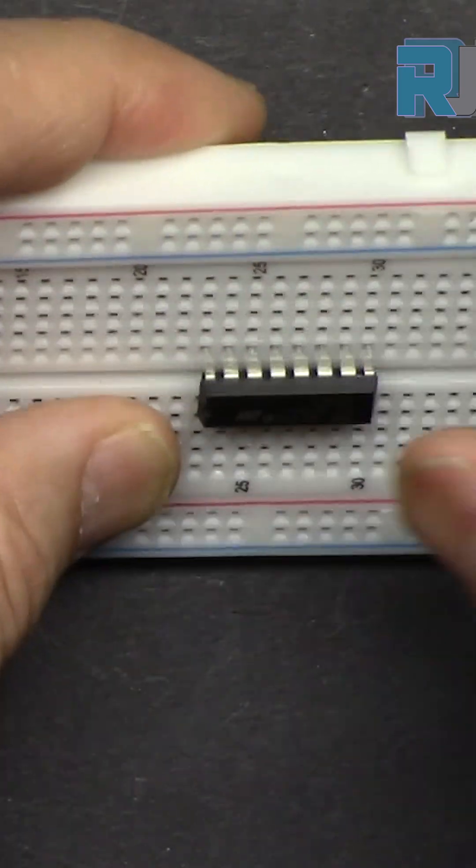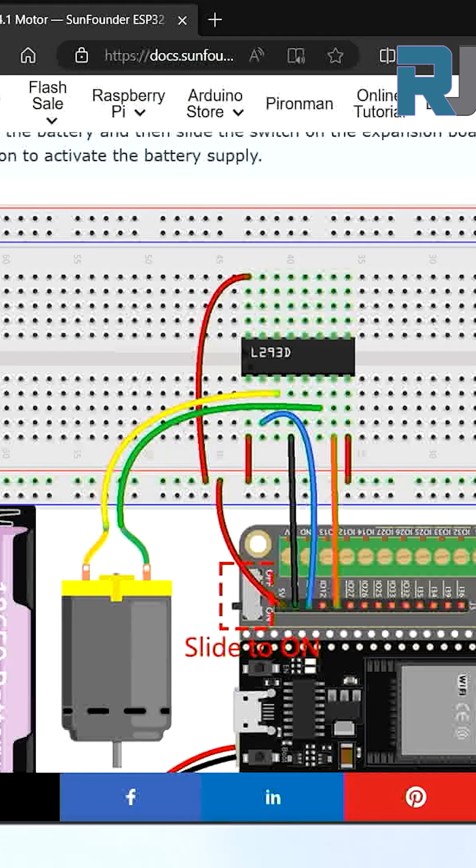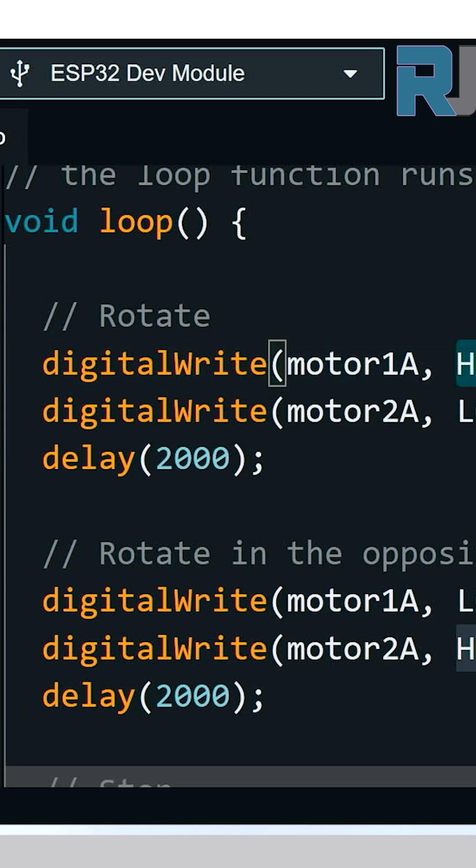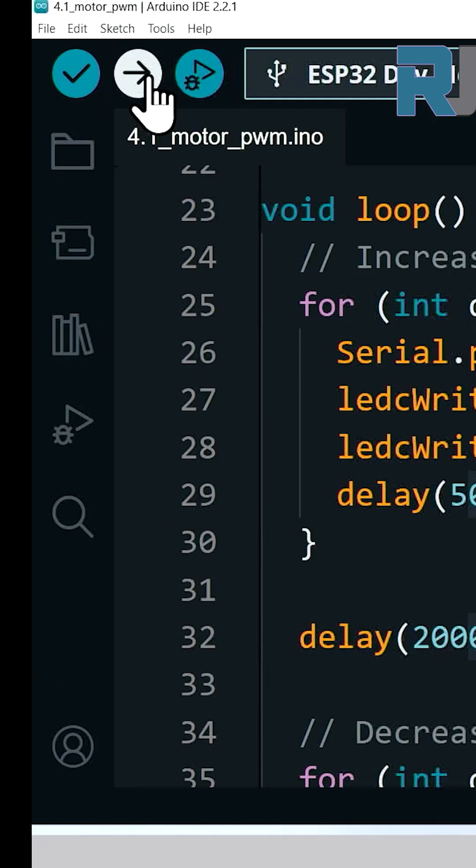Insert the L293D into the breadboard. Do the wiring as shown. Copy the code from robojax.com and paste it into Arduino IDE. Click Upload.